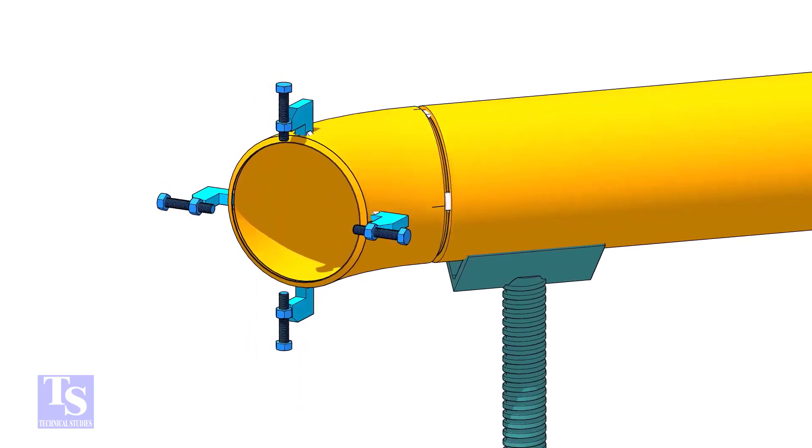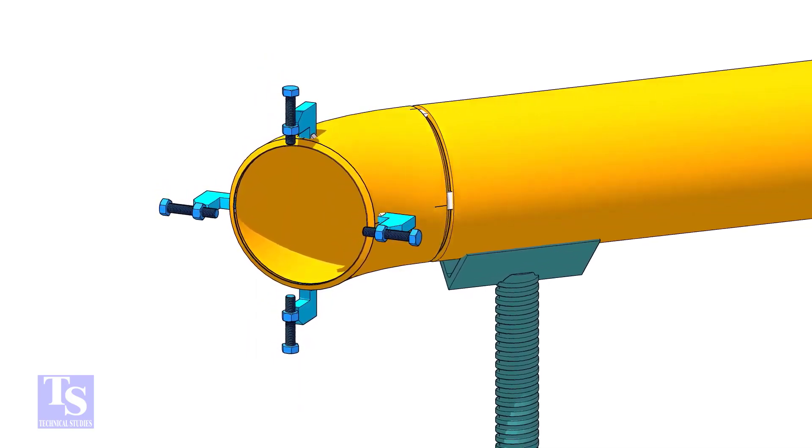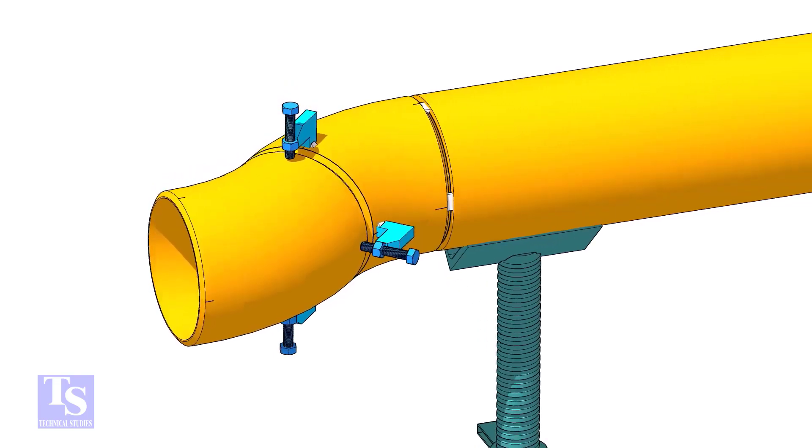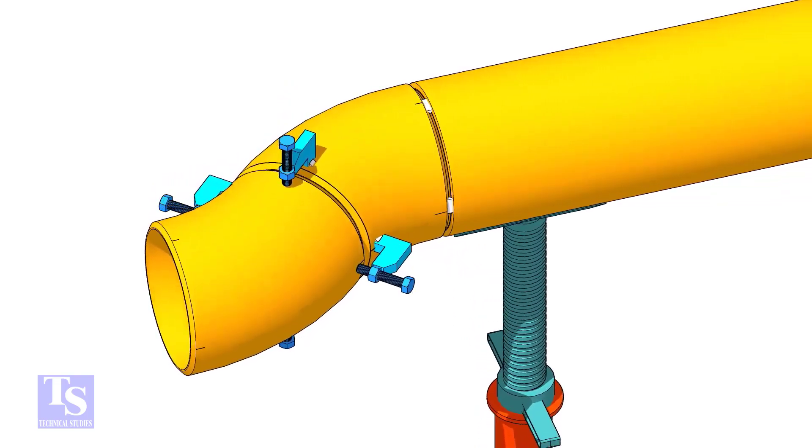Tack weld four jack bolts as shown. Put the other elbow in the jack bolts and match the center lines of both elbows.